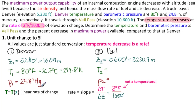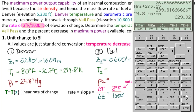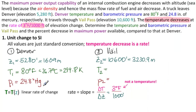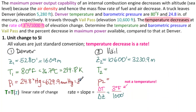For 24.8 inches of mercury, we first convert to millimeters mercury using the length conversion inches to millimeters, giving 629.9 mm Hg. In case we need it in Pascals, we multiply by 10^5 and divide by 760, giving 82,884 Pascals.